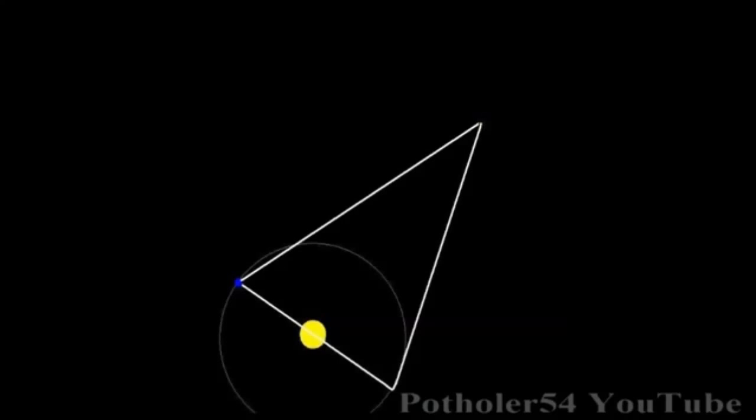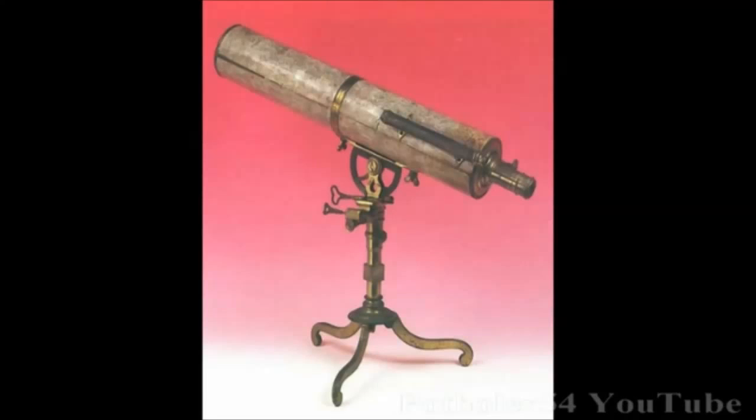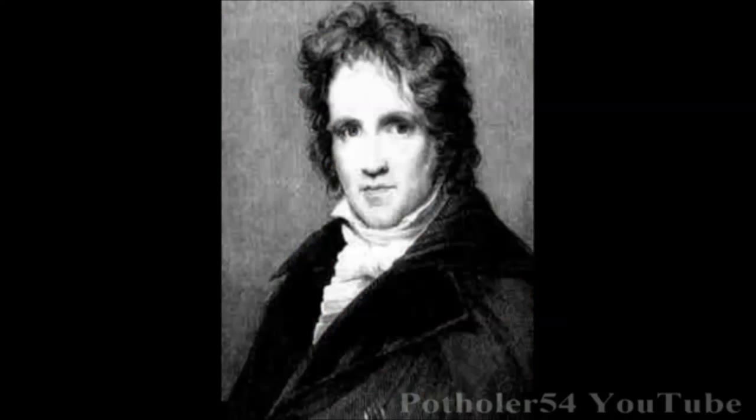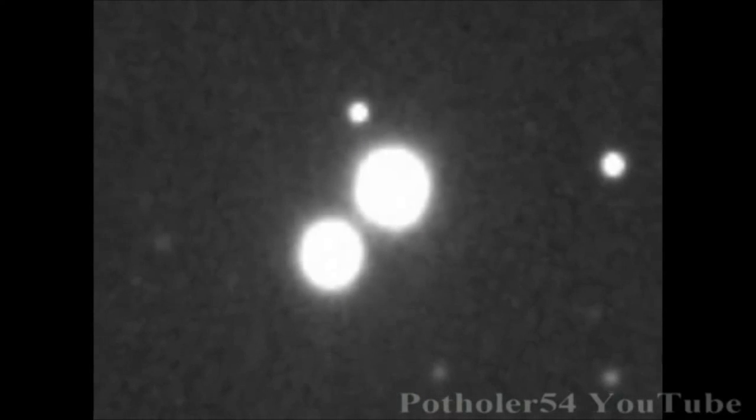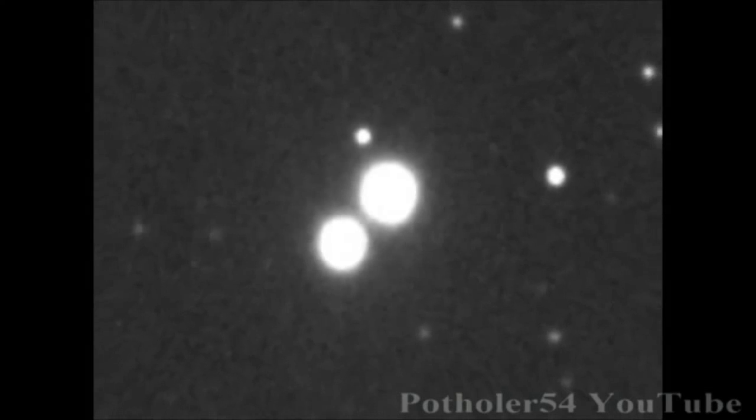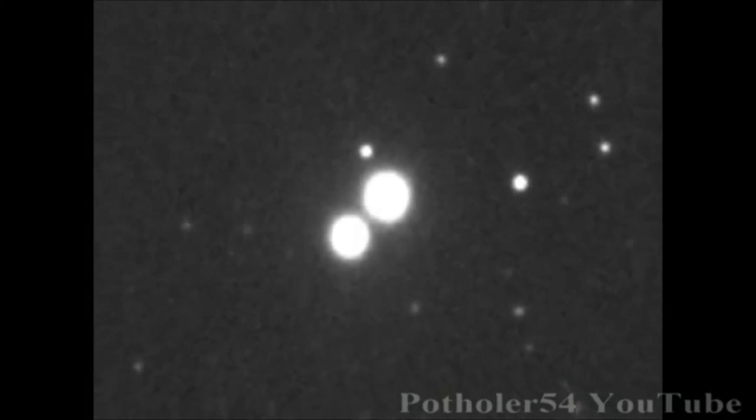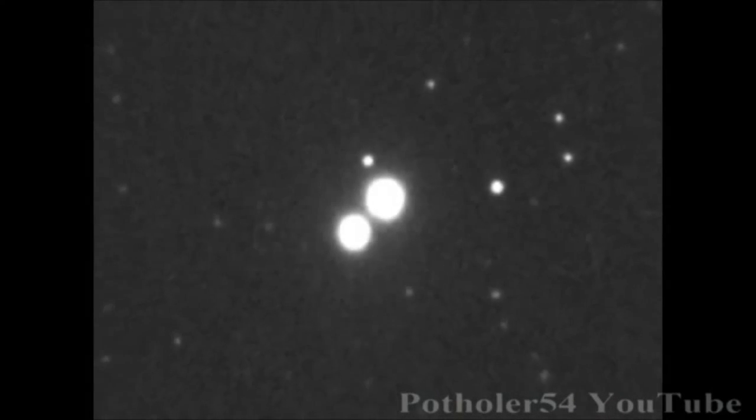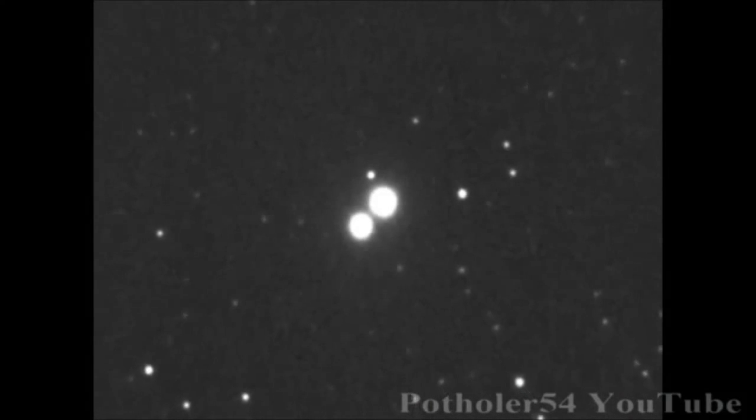This principle was known in the 17th century, but their instruments simply weren't accurate enough to measure such a tiny angle. But in 1838, the technology had caught up. The Prussian astronomer Bessel found that the binary star 61 Cygni was an astounding 60 trillion miles away. It was a distance so huge that it had to be measured in terms of the number of years it took light to cross it. 10.3 light years.